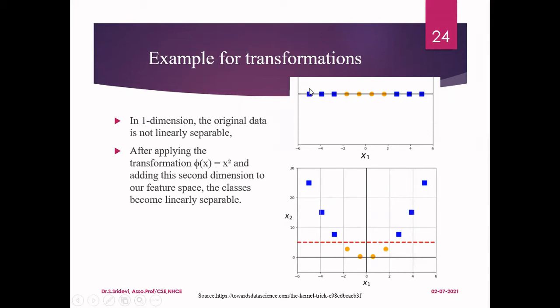Now let us see this example. This is a data set with one dimension — I have only a single value. The values here are around minus 0.5, minus 1, minus 2, minus 3, minus 4, and on this side plus 1, plus 2, and so on. So here, it is not a 2D point — it is a single value only. This is a one-dimensional plane, so I am writing x1 as the one-dimensional value. There are two different classes: one class is represented by the orange circle and the other by the blue square. In this, I cannot draw a straight line separating these two classes, but our aim in SVM is to draw a plane separating the two classes, which is not possible here.